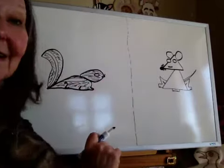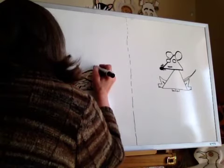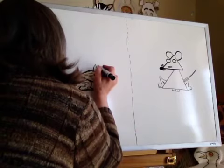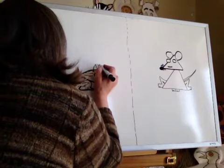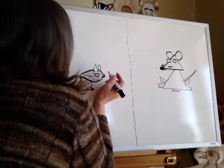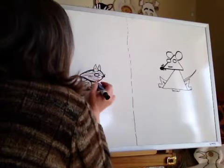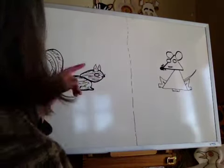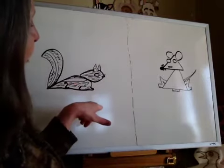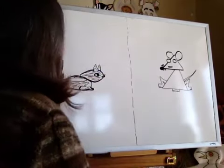Oh, she's got to have some ears. Their ears are kind of pointy. There we go. And probably put some hairs in there too. Okay. Chipmunk has to look at the mouse and the mouse has to look at the chipmunk. So, of course, I'll put her looking that way.